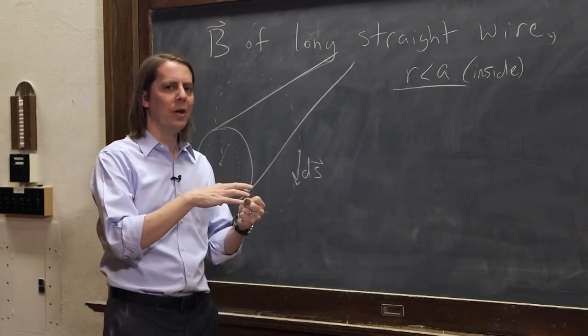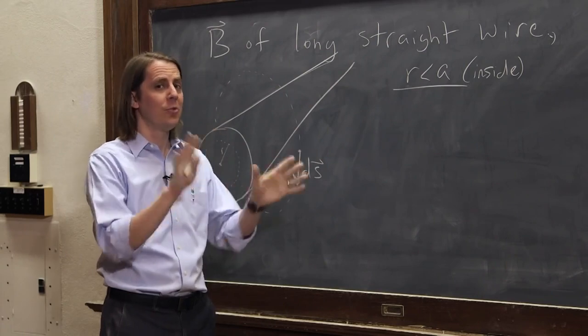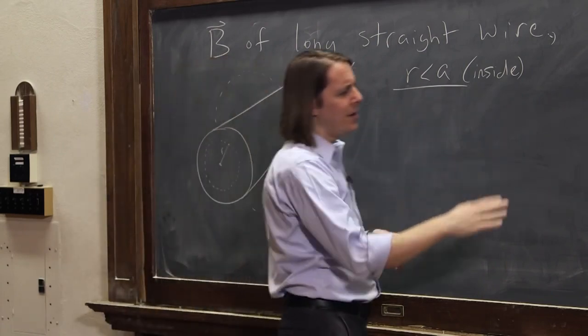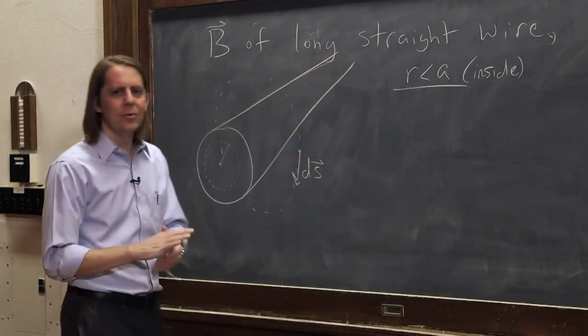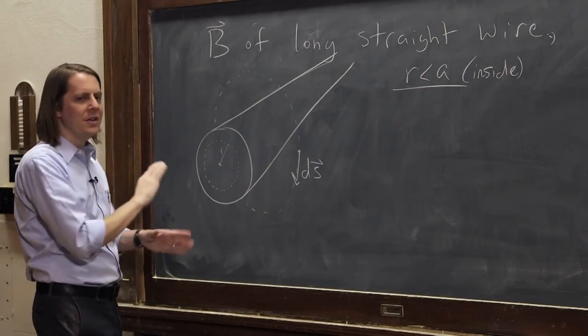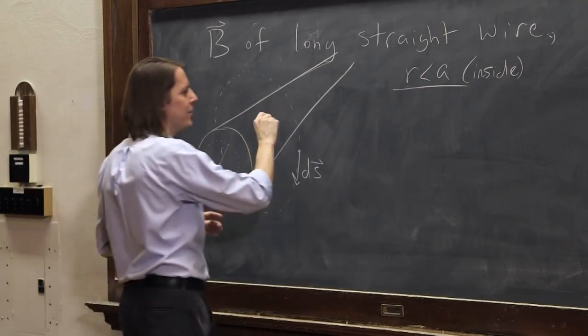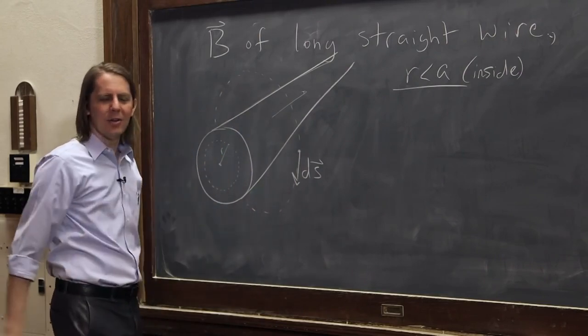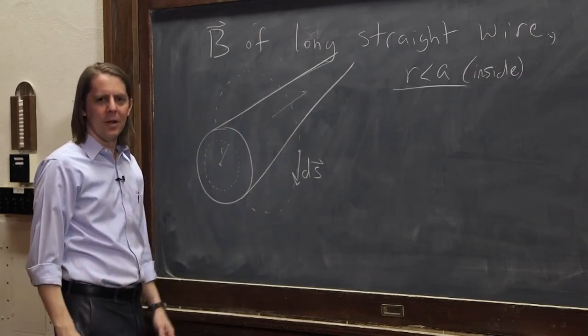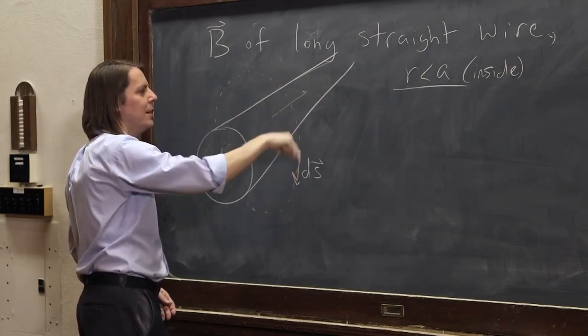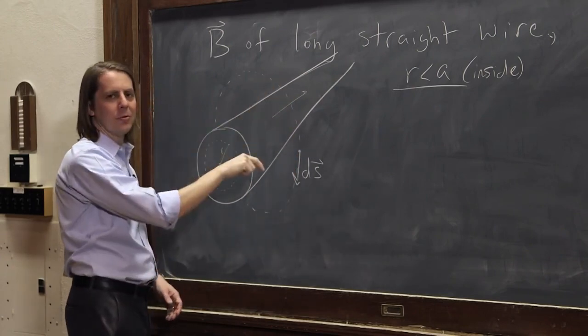Now, if you think back to doing the electric field of a point charge with Gauss's law, we sort of reconfirm Coulomb's law. And I argue that I actually didn't use Coulomb's law at all. I just used symmetry to say certain things like this. Here, I'm kind of using our result from Biot-Savart to say that the B field goes around.